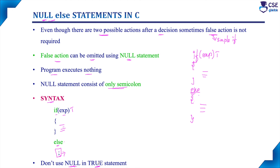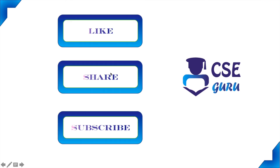Generally, the NULL statement is also used in looping constructs — that is, in for loops, while loops, and do-while loops. When we discuss looping statements in C, we will also discuss the NULL statement at that time. This concludes the NULL ELSE statement. Thank you for watching this video.